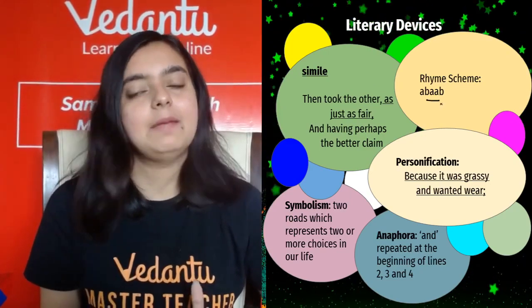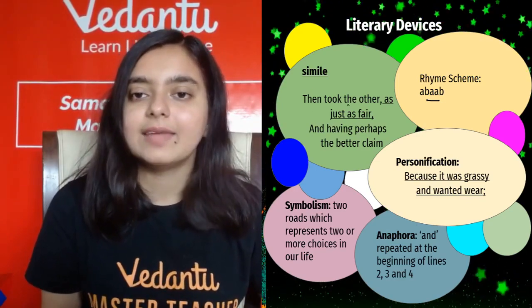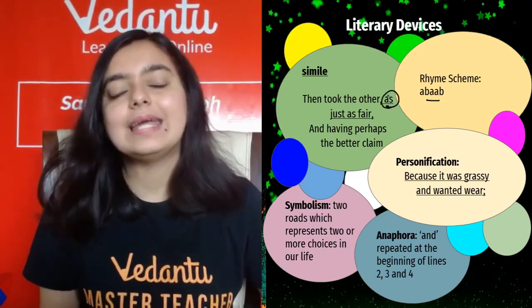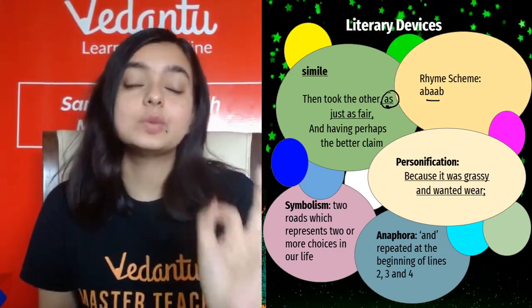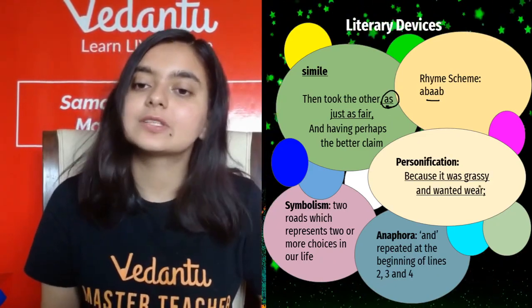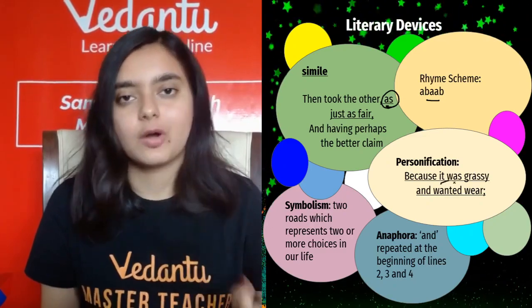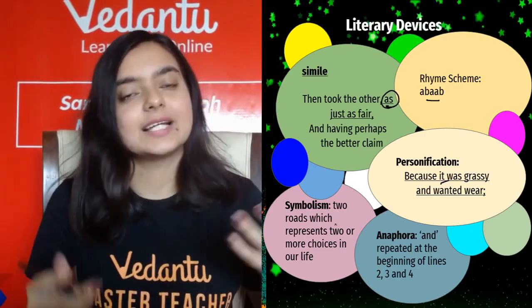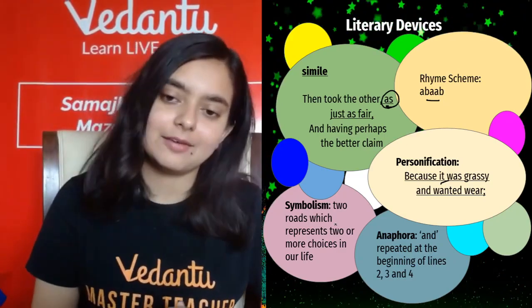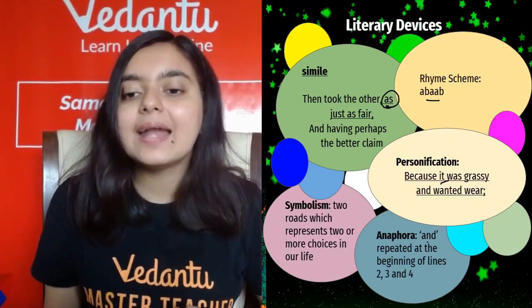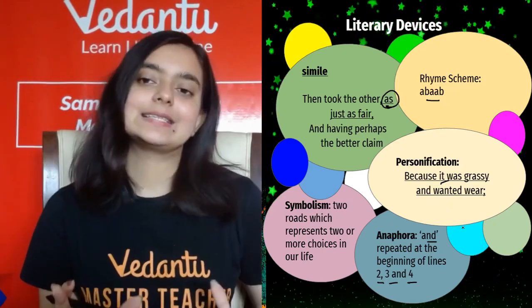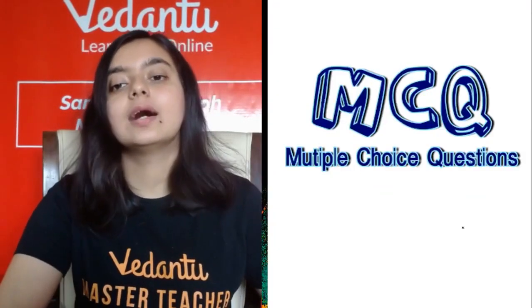The rhyme scheme is ABAAB. The literary devices include: simile — 'just as fair,' comparing the two roads using the keyword 'as'; personification — 'grassy and wanted wear,' giving human attributes to the road; symbolism — the two roads symbolize the choices we make in life; and anaphora — 'and' is repeated at the beginning of lines two, three, and four.